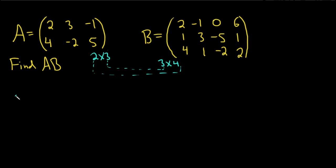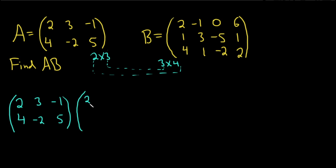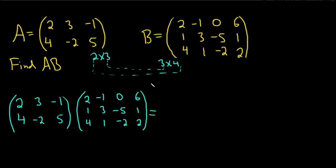I'm going to write down A again: 2, 3, negative 1, and then 4, negative 2, 5. And let's put B right next to it for convenience: 2, 1, 4, negative 1, 3, 1, 0, negative 5, negative 2, and 6, 1, 2. The resulting matrix will be a 2 by 4, so we'll have two rows and four columns.